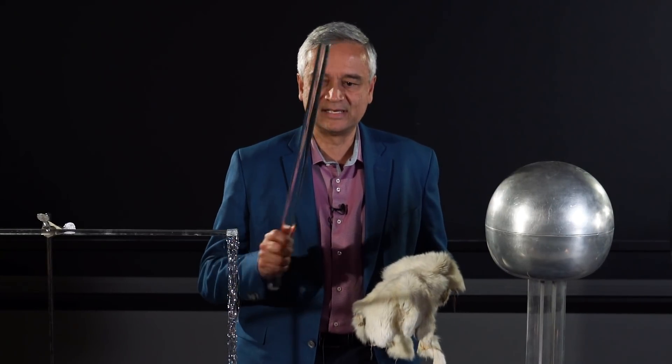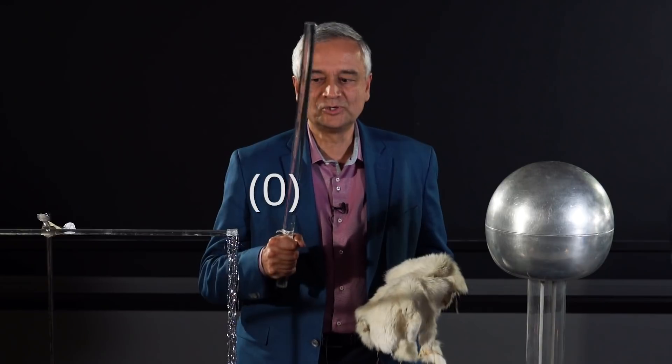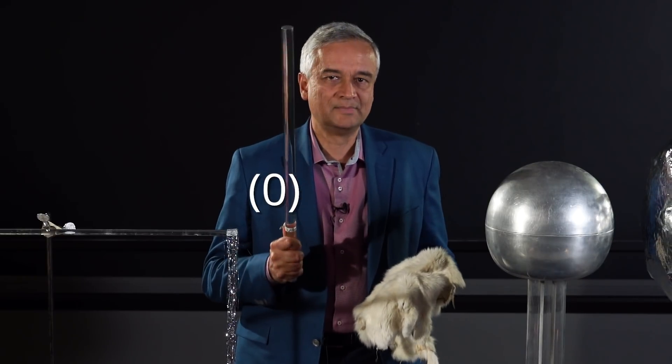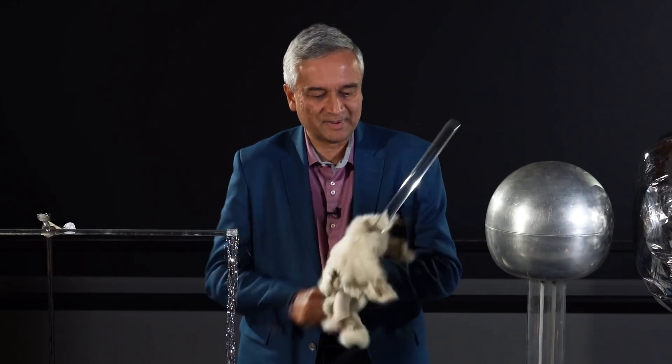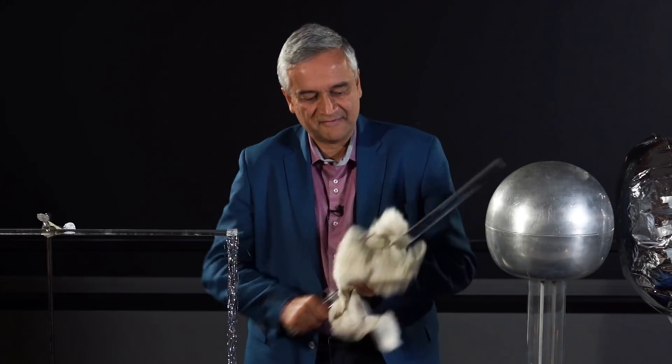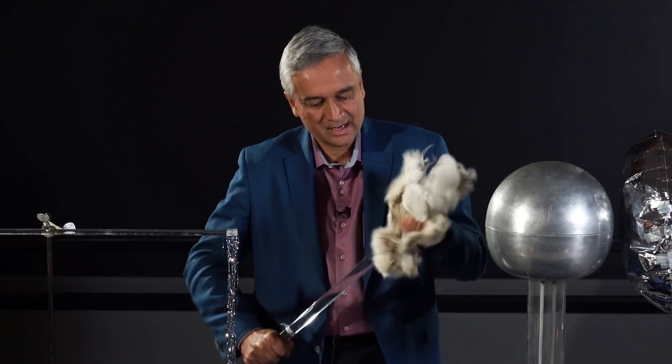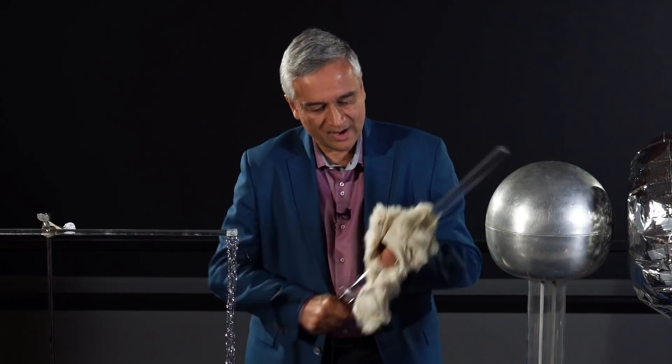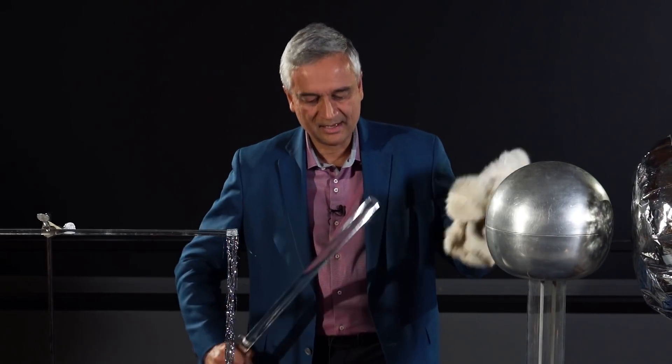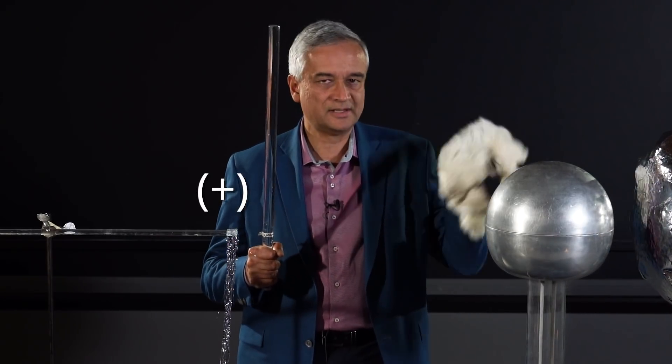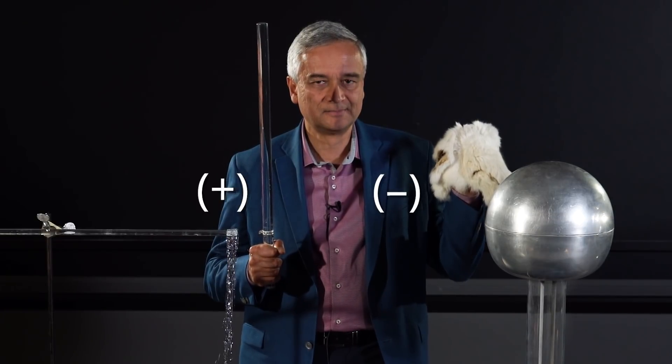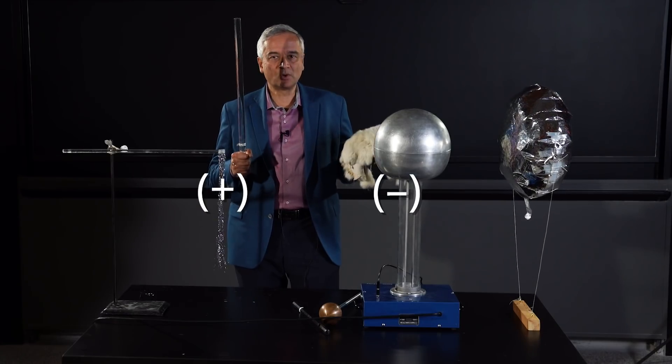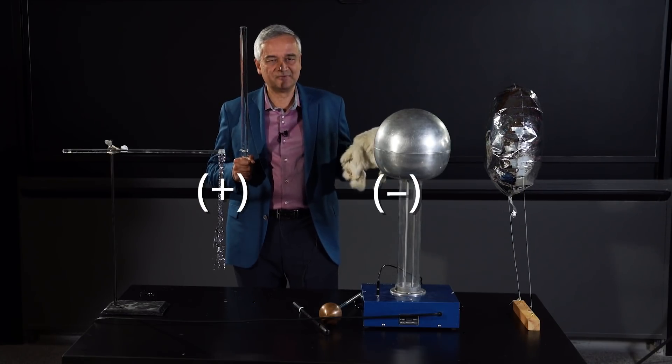So this is a plexiglass rod. It's right now neutral. I'm going to make it positively charged, and I do that by ripping some electrons off of it, getting them onto this fake fur. So I claim that now after rubbing the rod like this, this rod is positively charged, and this fur is negatively charged, but the total charge of the two together is the same as it was before, which is zero.